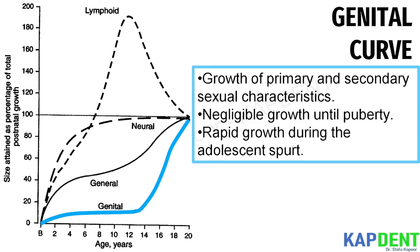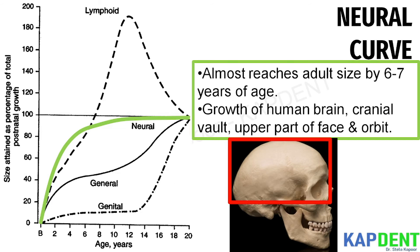The neural curve depicts the growth of the human brain, cranial vault, upper part of the face, and orbit. Neural tissue grows very rapidly and almost reaches adult size by around six to seven years of age. Not only is there rapid growth of the head and brain, there is also increasing functional complexity of the brain and nervous system as we learn language, emotion, and various motor tasks. Hence, the cranial vault of an infant is disproportionately larger than the rest of the craniofacial region.